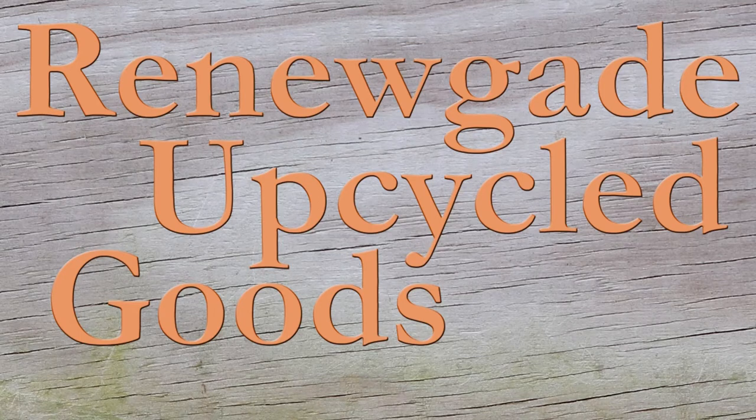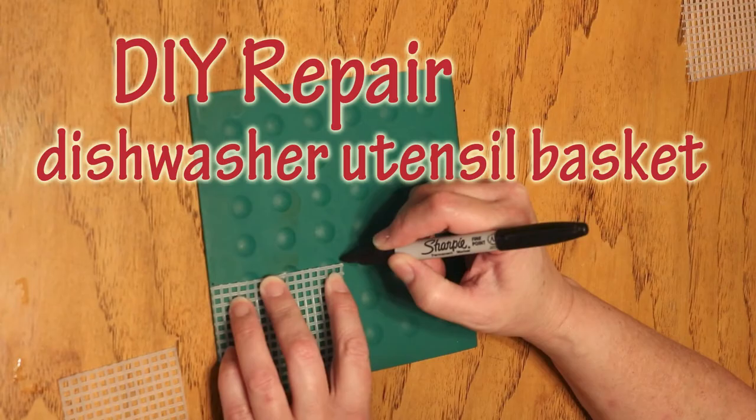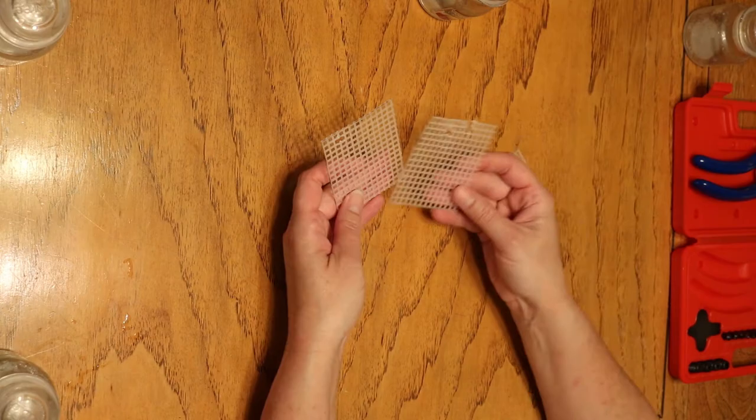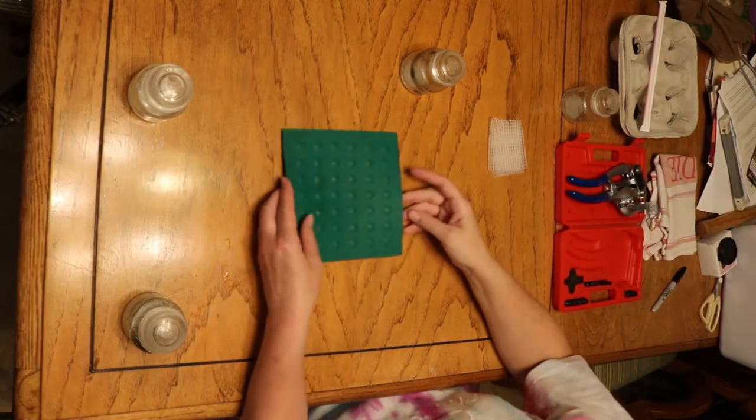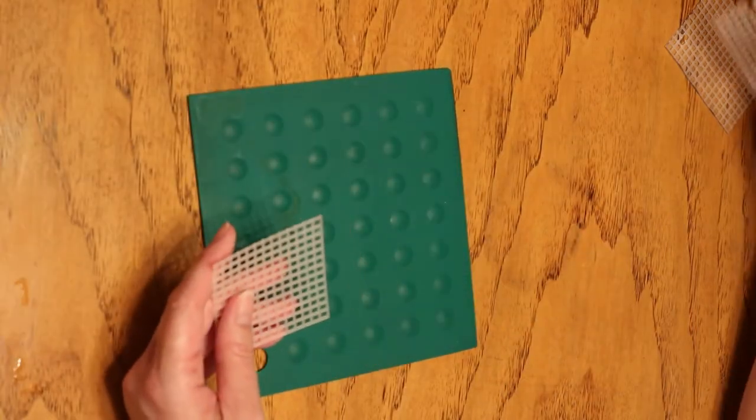I used plastic cross-stitch canvas to cover holes in the bottom of my dishwasher utensil basket so silverware wouldn't fall through, but it melted a bit the first time I ran the dishwasher. I needed something that wouldn't melt.